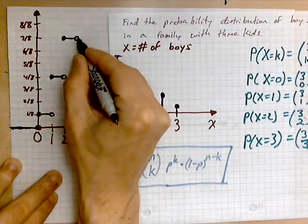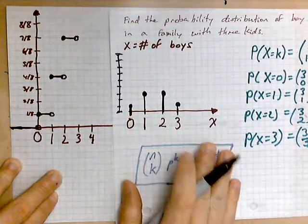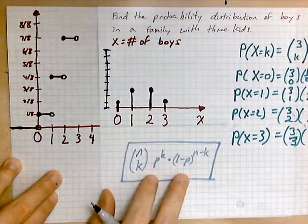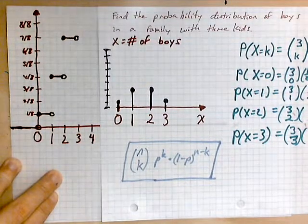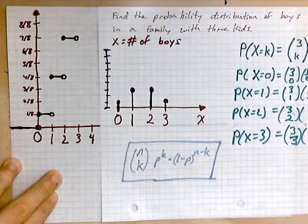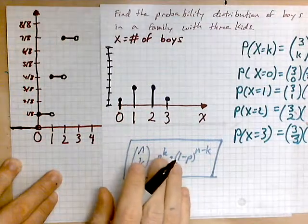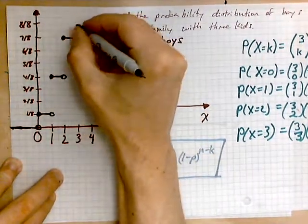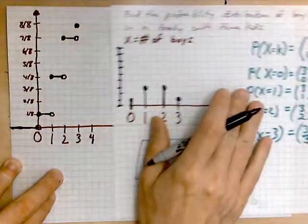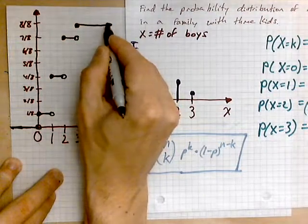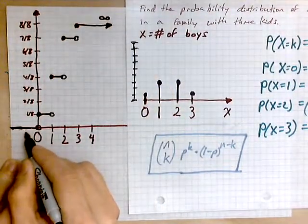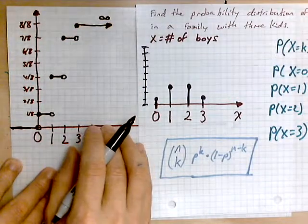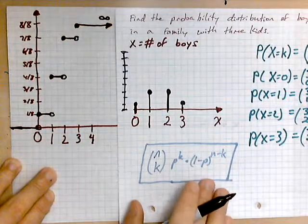Draw a line from two to three and mark a hole at three. As we accumulate all these values, the last jump at three is one-eighth, bringing us up to eight-eighths, which equals one — the maximum. So we leap up by one-eighth, make that solid, and draw a line extending to positive infinity, just as the line comes in from negative infinity. This is the CDF — the cumulative distribution function of the number of boys in a family of three kids.